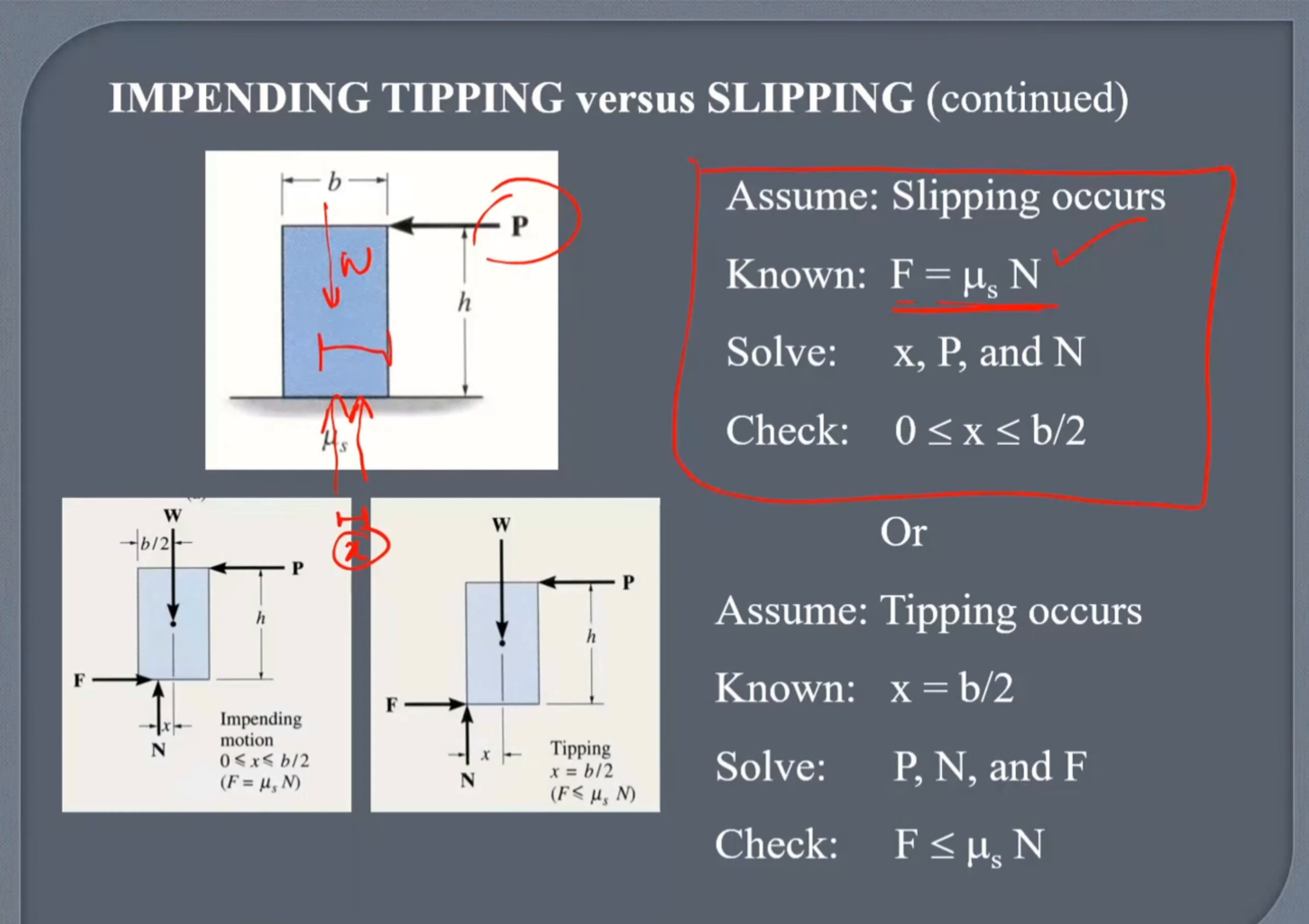So let me explain it again. Remember there are just two things for the movement, for the motion. One is either it's going to tip or it's going to slip. If it slips, it means your friction force f calculated here. This f will be equal to mu n. So it basically will reach the maximum limit mu s.